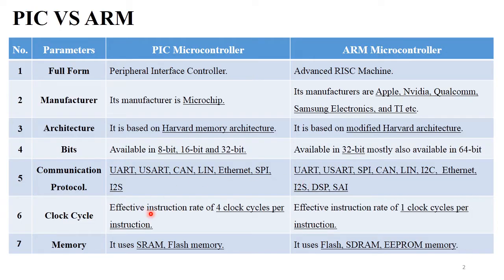Regarding clock cycles, PIC microcontroller has an effective instruction rate of 4 clock cycles per instruction, while ARM microcontroller has 1 clock cycle per instruction. PIC microcontroller has more pipelining stages for performing different operations.